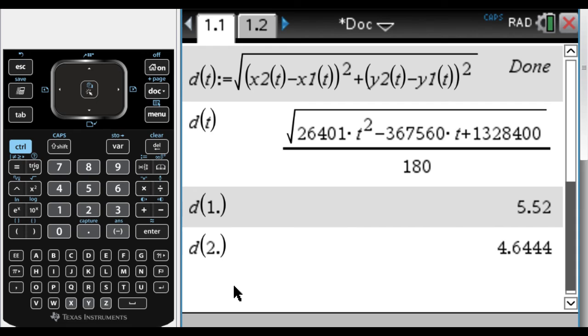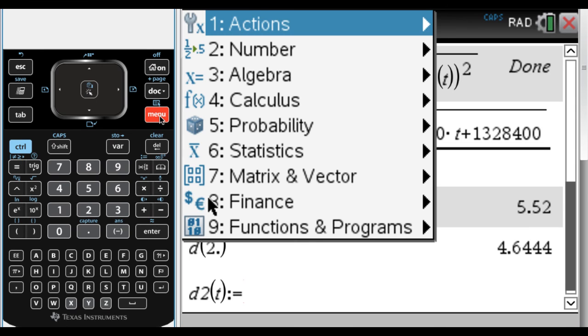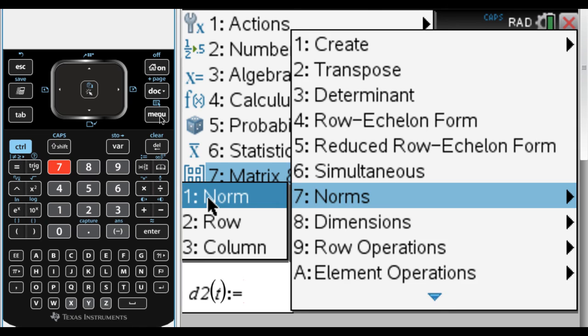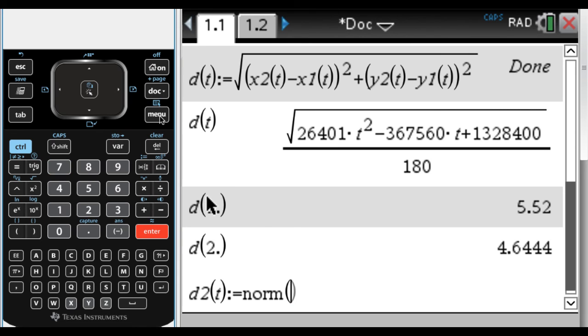A second way of entering the distance formula is to think of the vector that's formed between the two points, right? So one of them is initial, one of them is terminal. So what I'm going to do is I'm going to find the norm of that vector. So that's menu, seven, and then option seven, and then option one. So that's norm. And now I need to give it a vector.